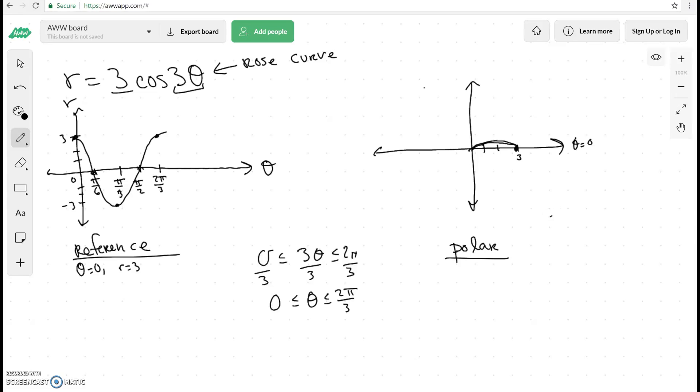At theta equals pi over 6, which is roughly around here, right, at theta equals pi over 6, I am going to go back to 0. Okay, so my radius in this case is 0. So this one is just going to go back to 0. Okay, so there's my first leaf.